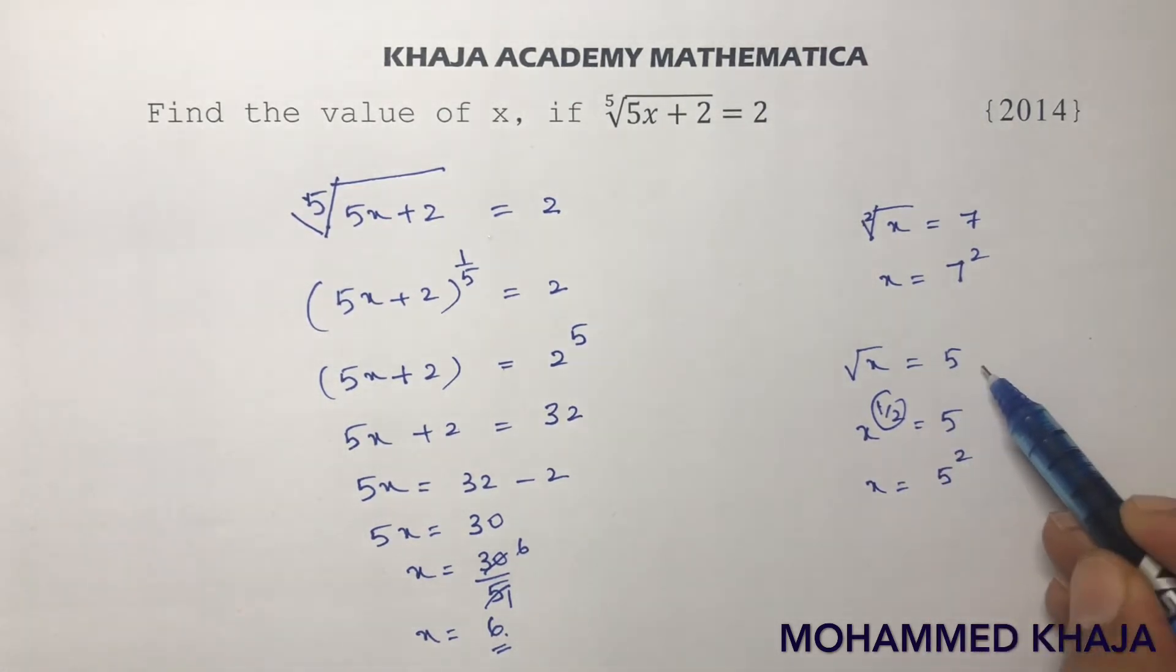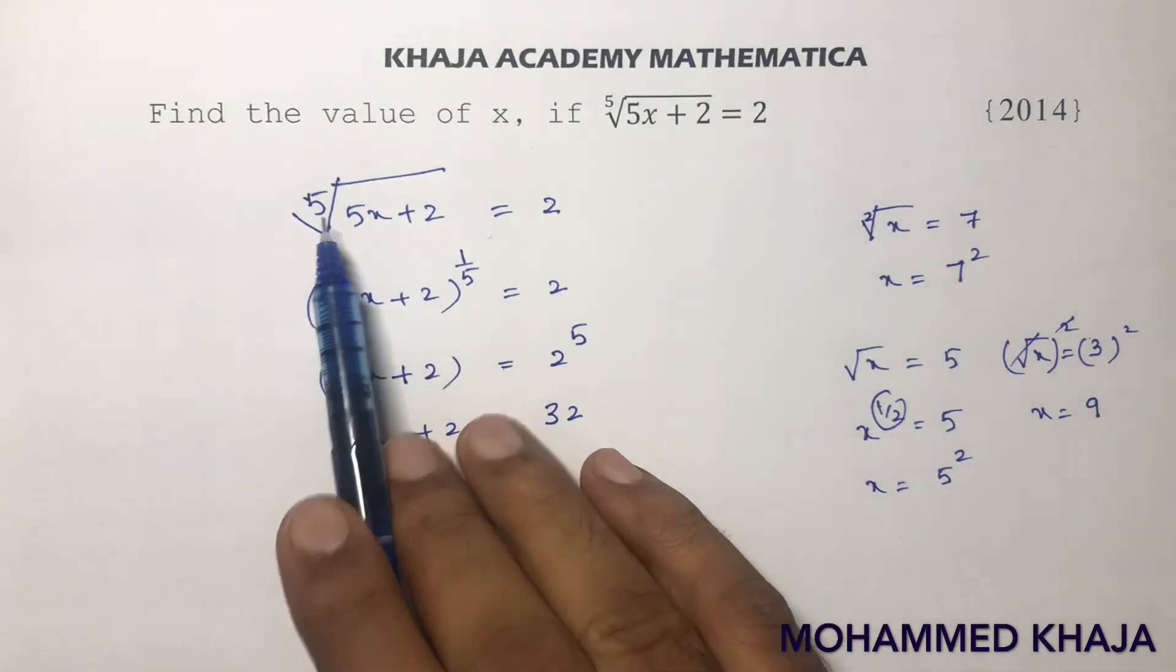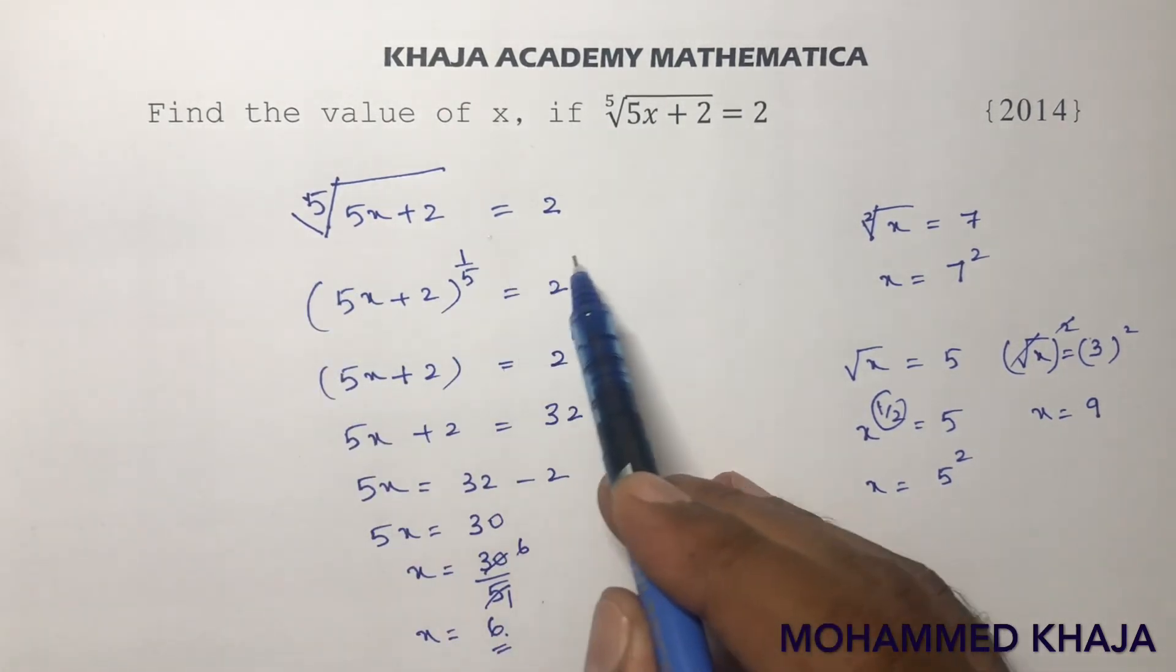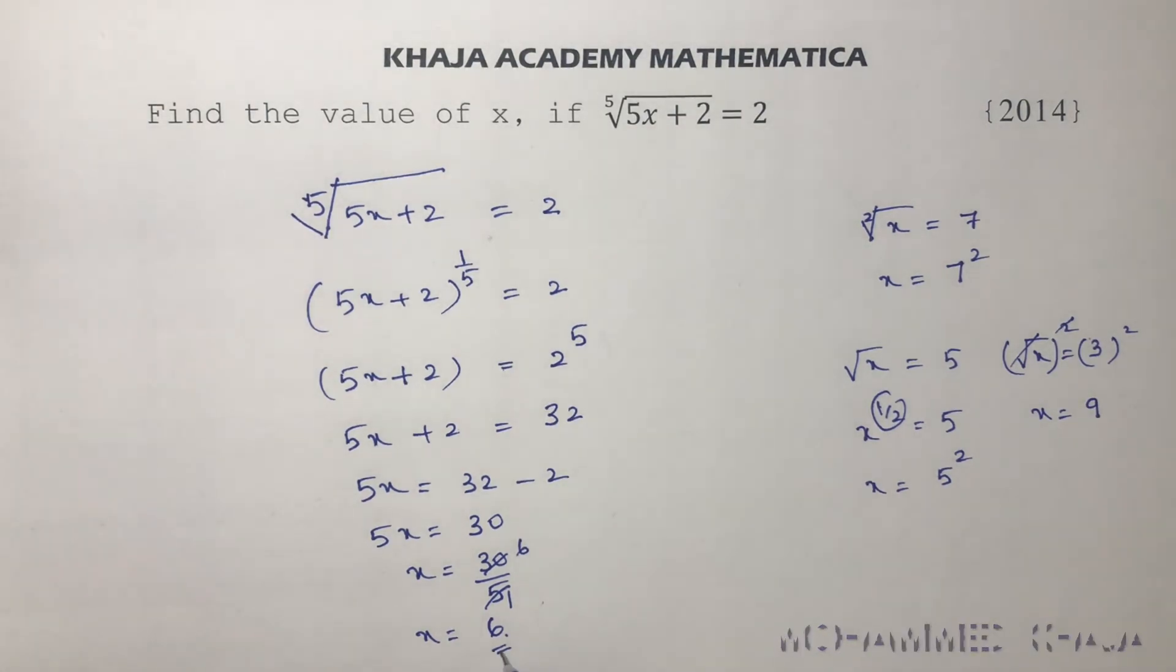Or you can say applying square root on both sides. For example, if it is 3 whole square and here also square, square and root cancel. So, x equals 3 square is nothing but 9. In this way, here it is fifth root. So, you can write whole power 5 on both the sides. So, you will get the answer in the same way. So, the answer is here 6.